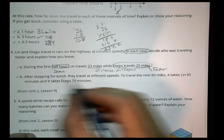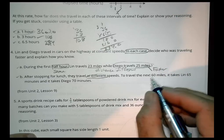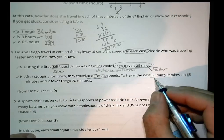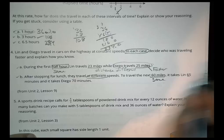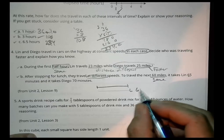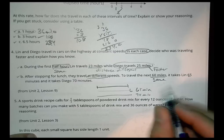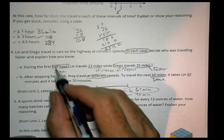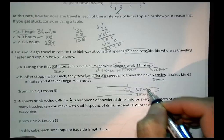In B, after stopping from lunch, they travel at different speeds. To travel the next 60 miles, it takes Lynn 65 minutes and Diego 70 minutes. This time the distance is the same, but the time is different. Lynn gets there in 65 minutes and Diego gets here in 70 minutes, which means Lynn got there faster than Diego did. So in the first example, Diego's faster. In the second example, Lynn is faster.